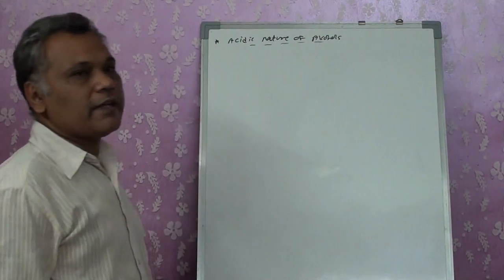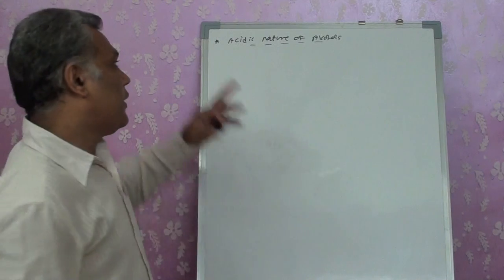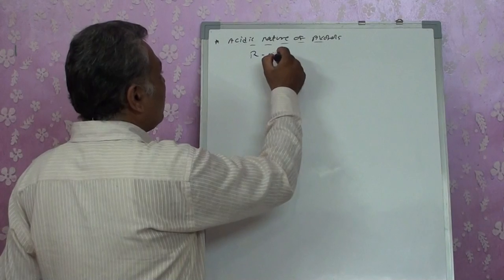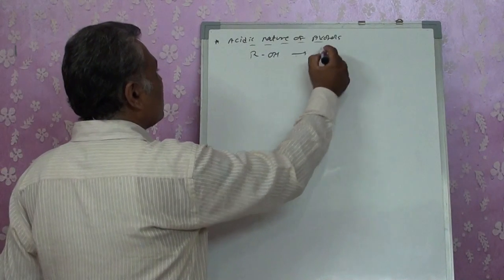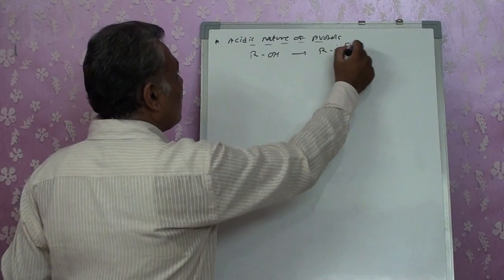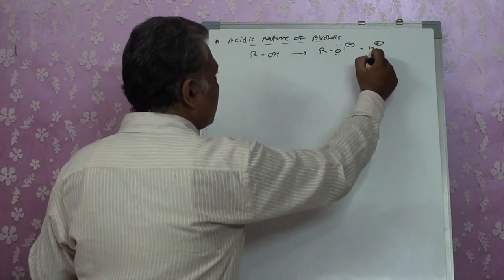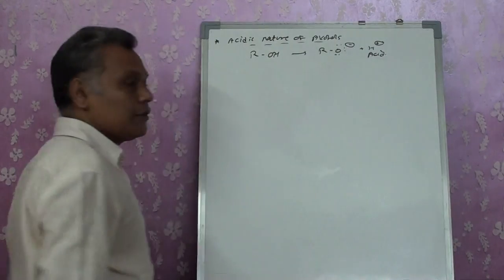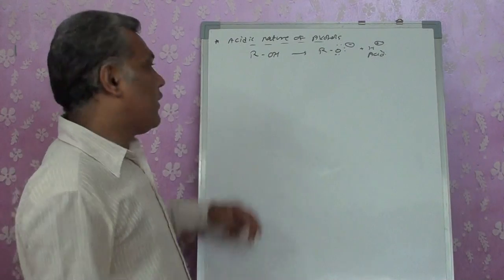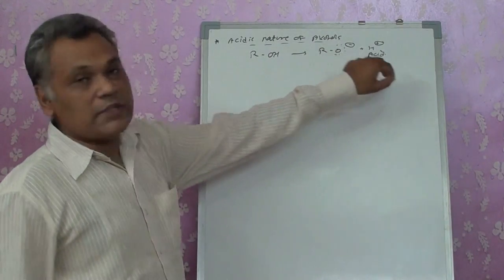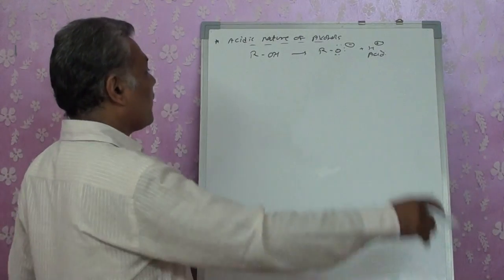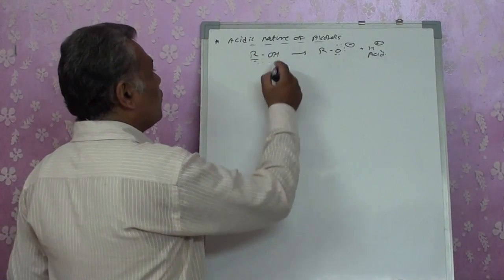For the acidic nature of alcohol, when we have an ROH group, this gets converted into RO⁻ and H⁺, so it produces an acid. We saw this as a reaction with metals — when reacting with metals it produces alkoxide plus H⁺, so it is acidic in nature.